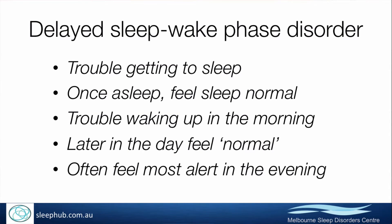That offset doesn't cause a problem if people can live on their own schedules, but not many of us can. It causes problems particularly in school, where it manifests as trouble getting to sleep — the teenager put to bed at 10 won't go to sleep until 1, then is dragged out of bed at 7, which is three hours before their body is ready to wake up. It's like trying to wake someone at 3 in the morning — heavy headed, grumpy, and takes ages to get going.